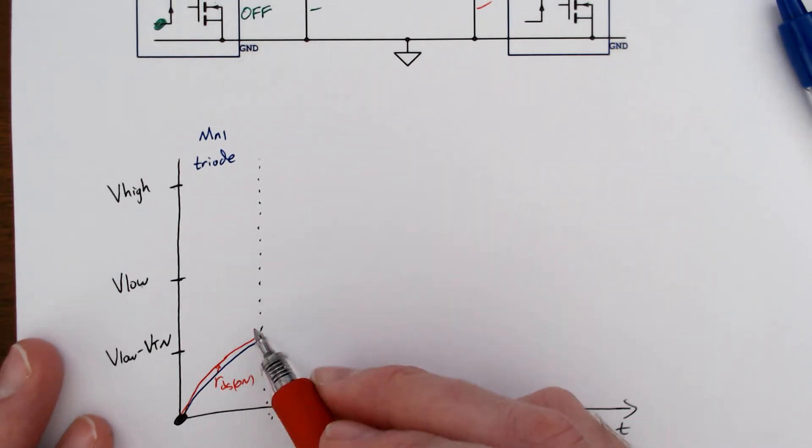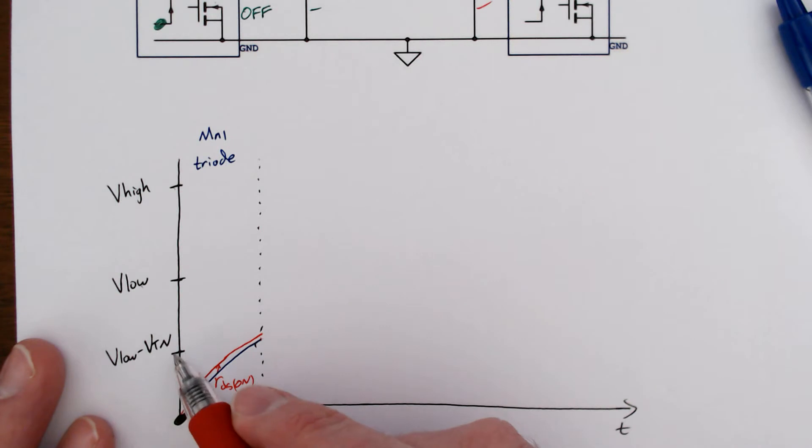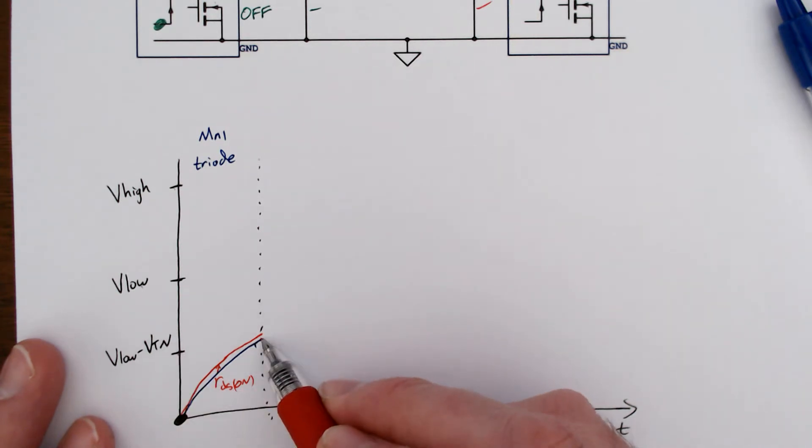We might go into saturation mode. It doesn't matter, it's just on. At this point, our MOSFET will turn off.